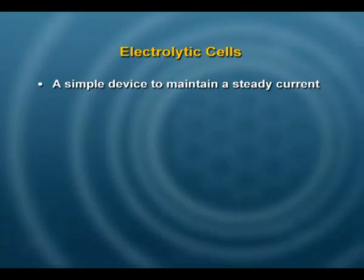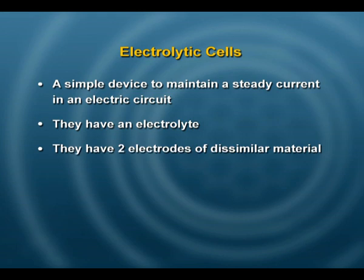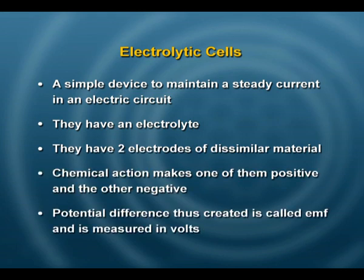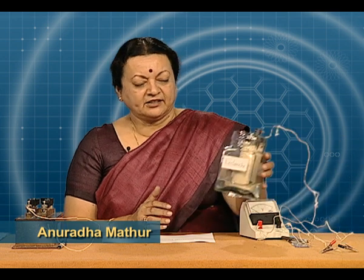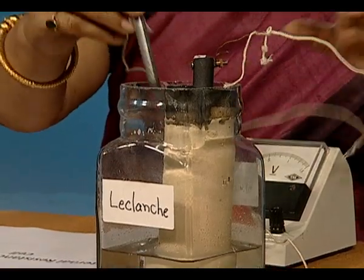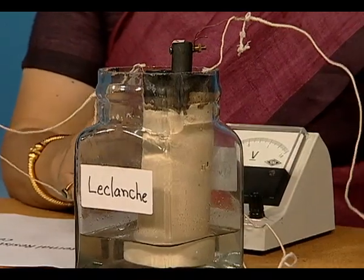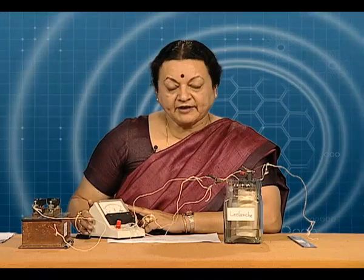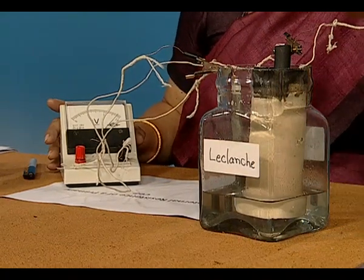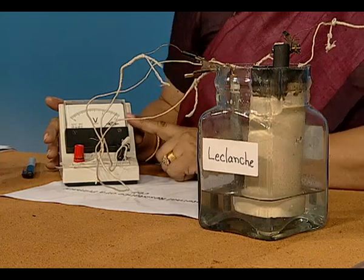Today we are going to talk about internal resistance of a cell. An electrolytic cell, as you already know, is one in which you have an electrolyte and electrodes, and the chemical reaction produces a potential difference between them. This potential difference is called the EMF of that cell. We have a Leclanché cell here, and when we check its potential difference between the two electrodes when it is not connected to anything else — meaning no current is being drawn from it — the value is 1.4 volts. This is our EMF.